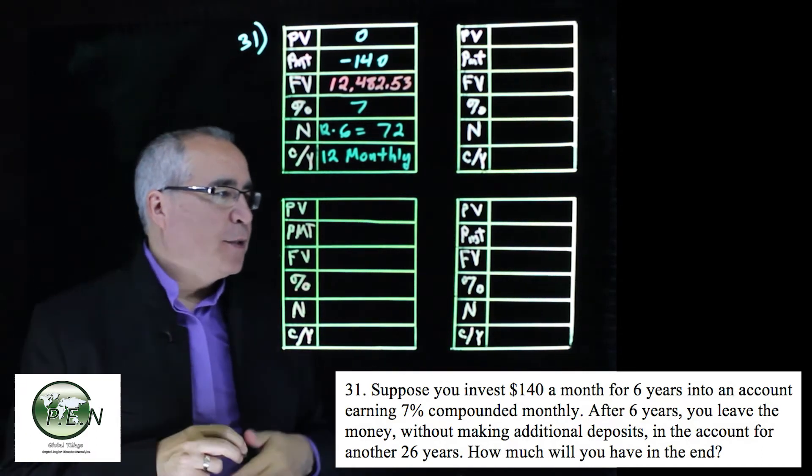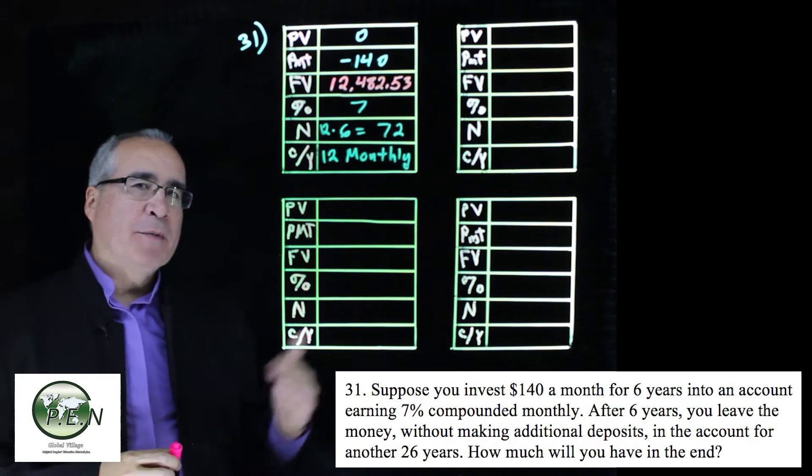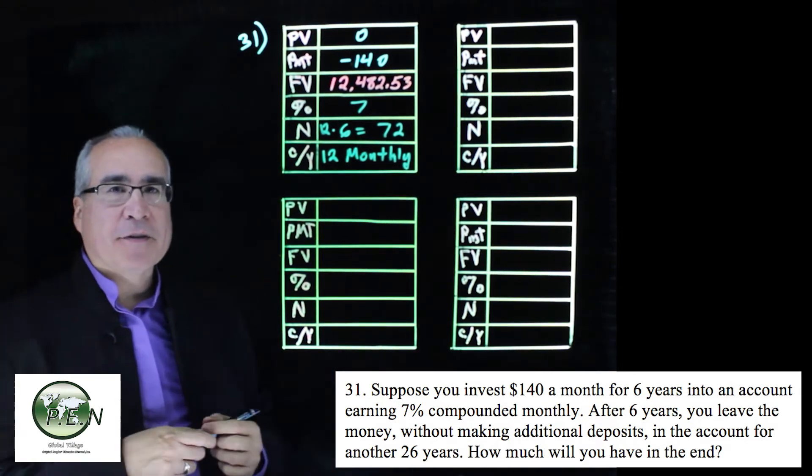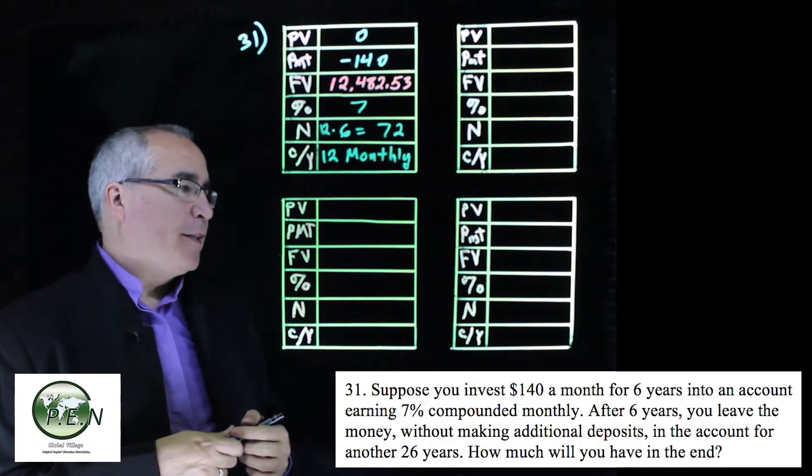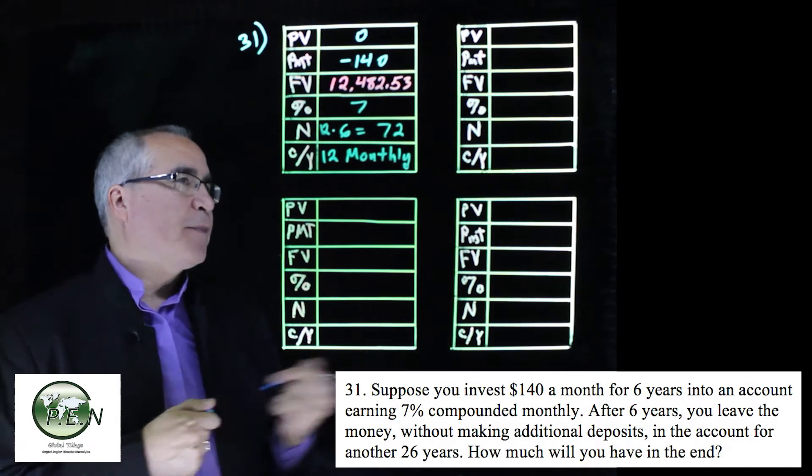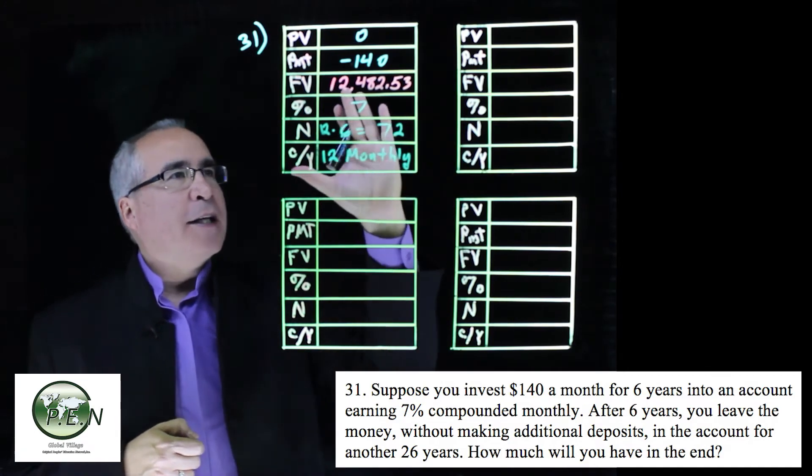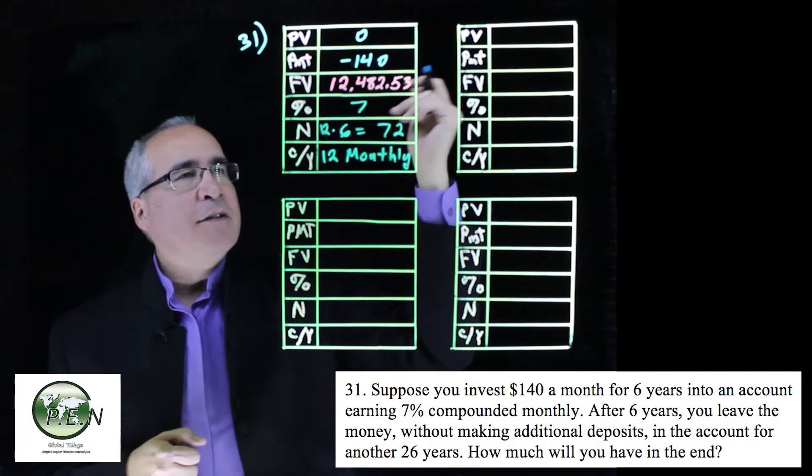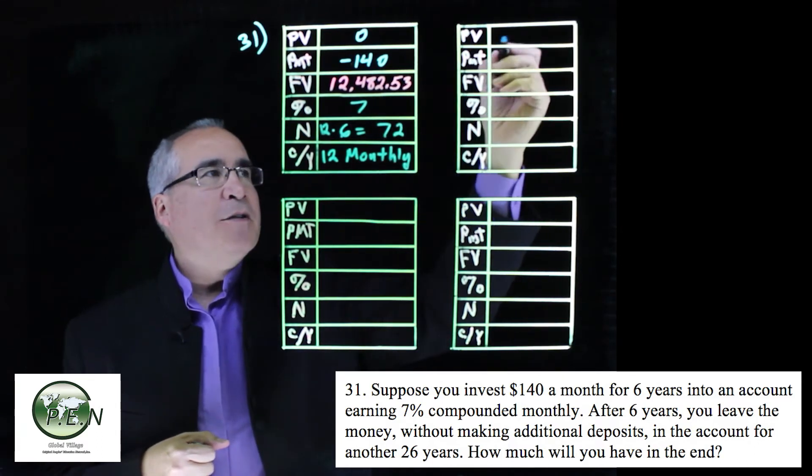Now the story tells us we stopped making payments at this time, and we're going to let it sit for another 26 years. Maybe it's retirement, whatever it is. What we need to do is, even though the account's not changing, this future value that we've calculated is now sort of like moving it into a new investment. It's now a present value because we decided not to take it and spend it; we decided to reinvest it.